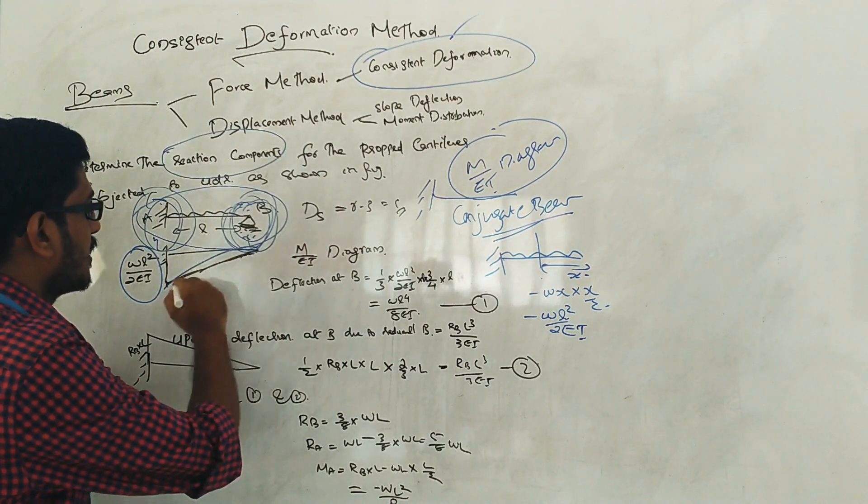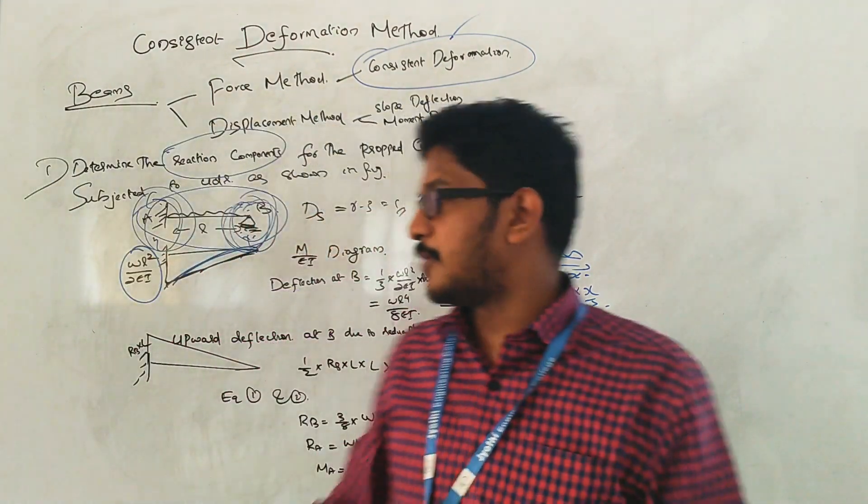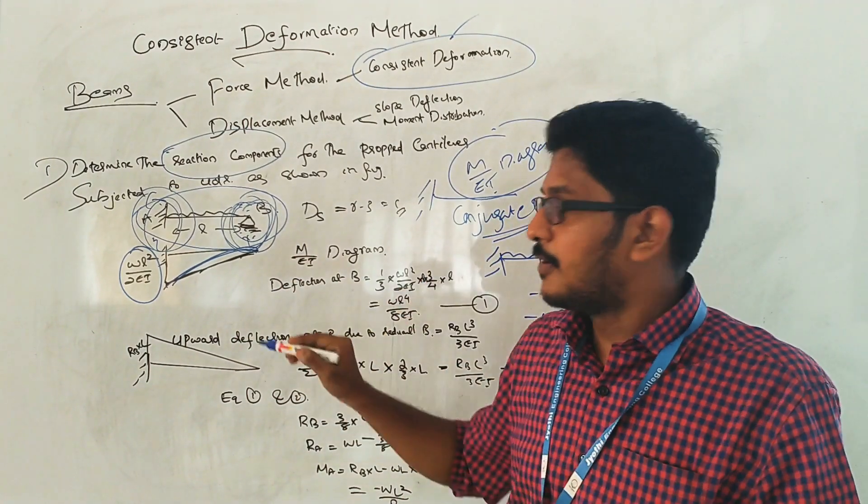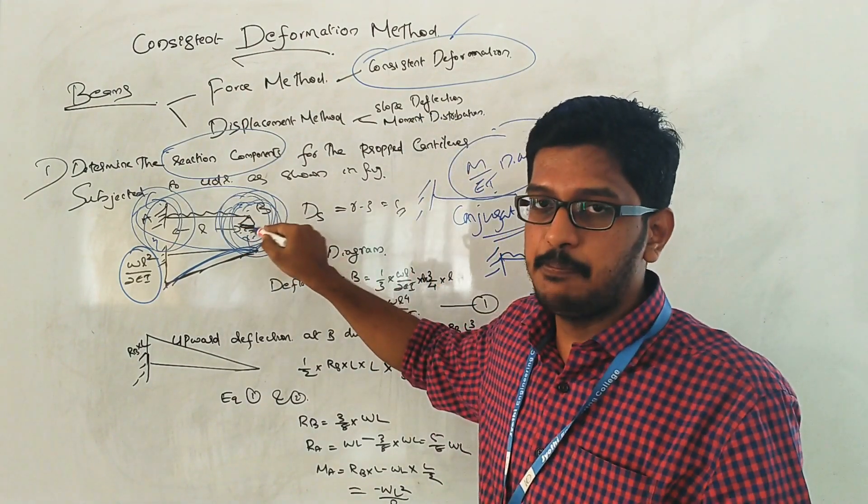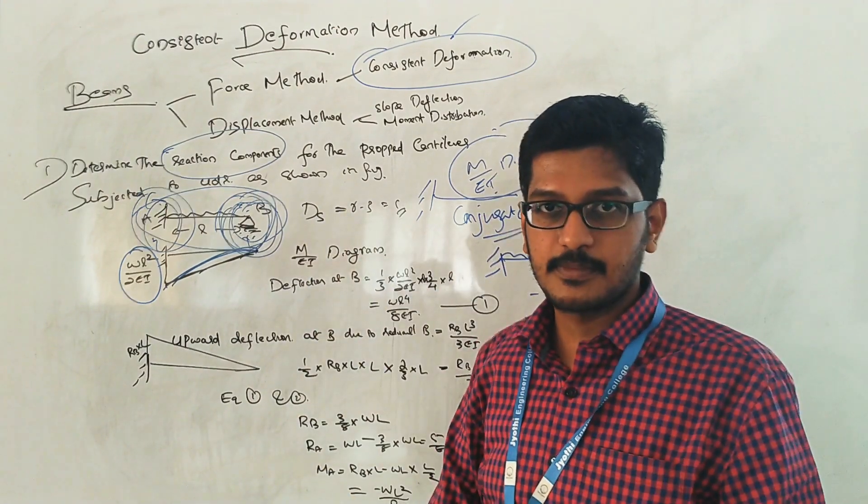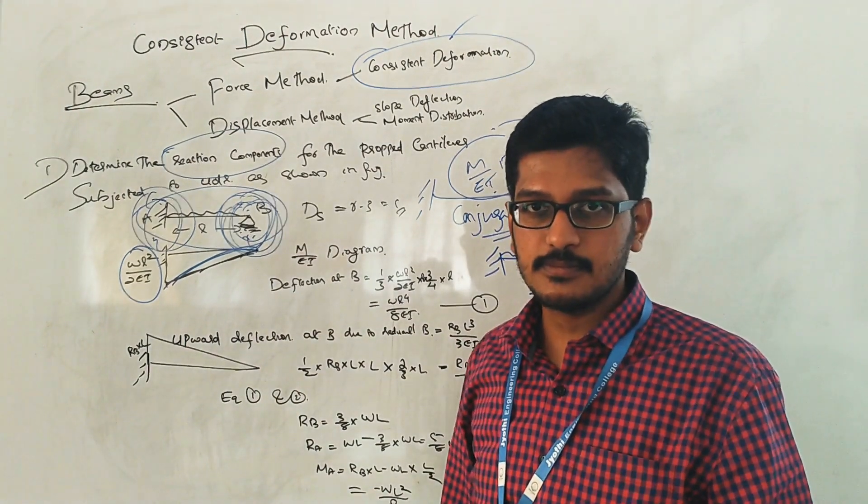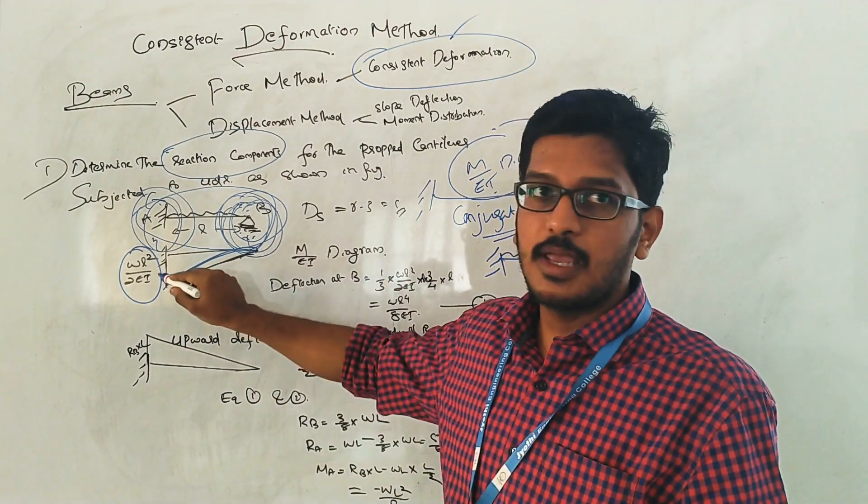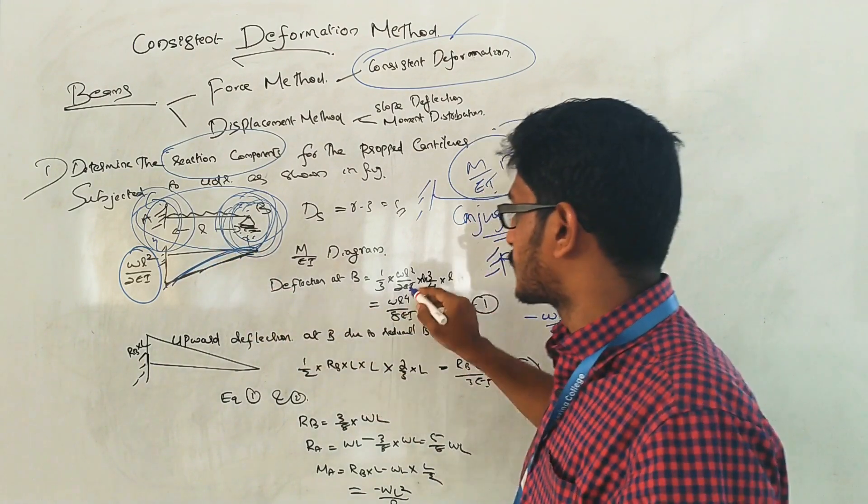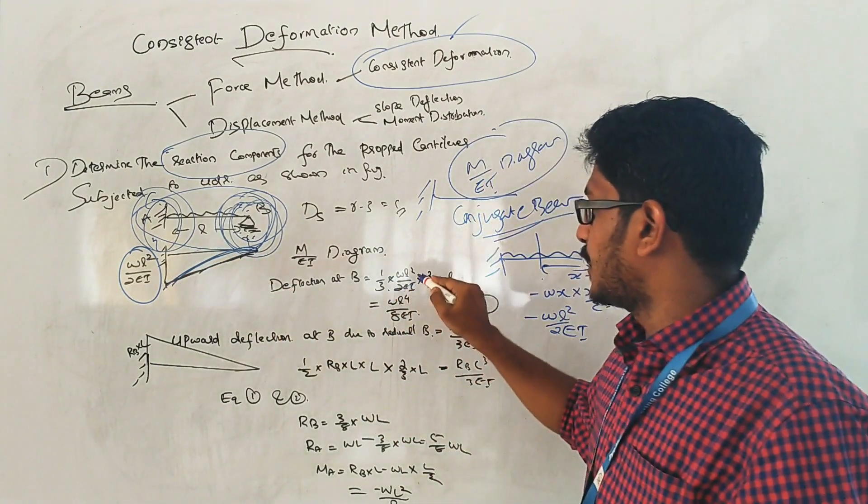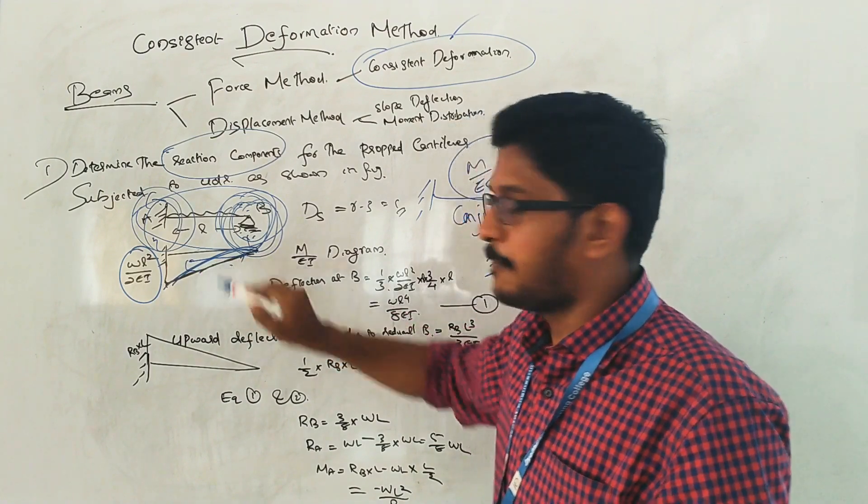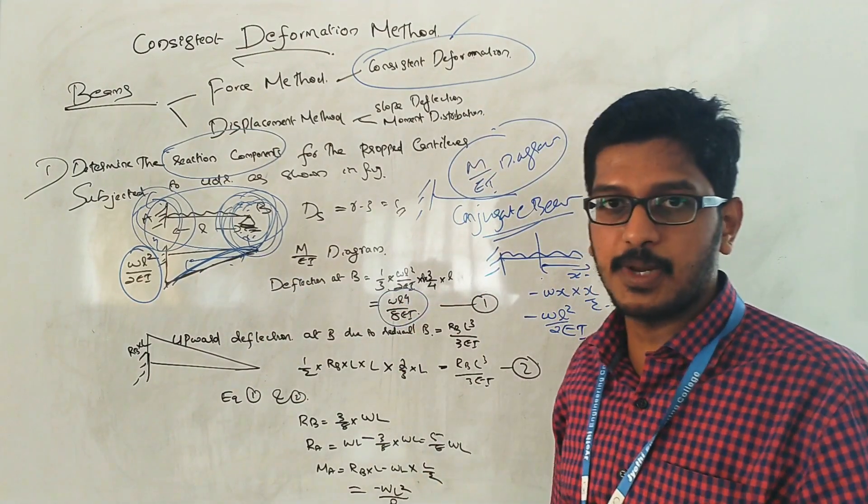We have to calculate the deflection at B due to this UDL. You have to take the area of this diagram and multiply it with the center of gravity. Area of this parabola is 1/3 into w l squared by 2EI into l. Center of gravity to point B is 3/4 into l. So final value is w l to the 4 by 8EI.